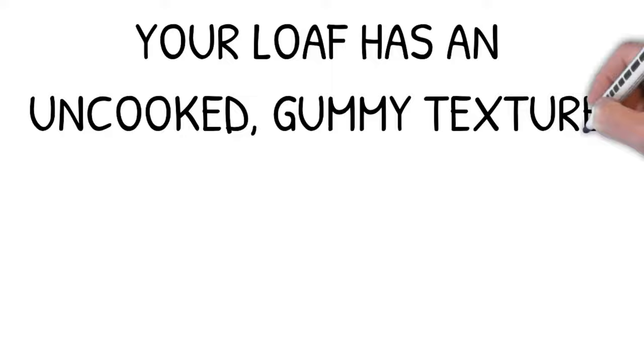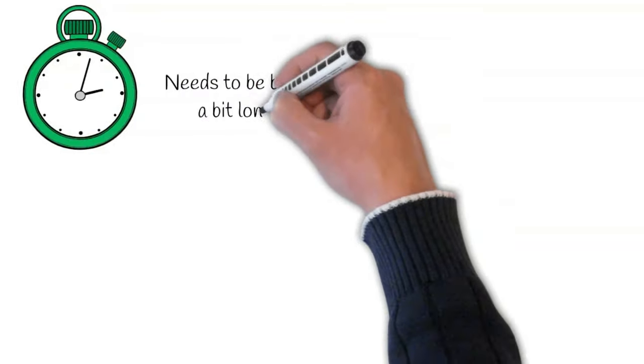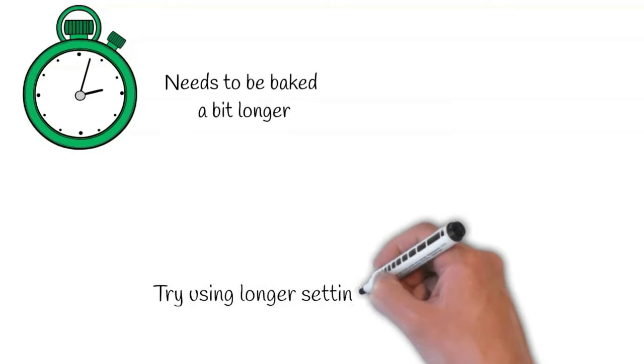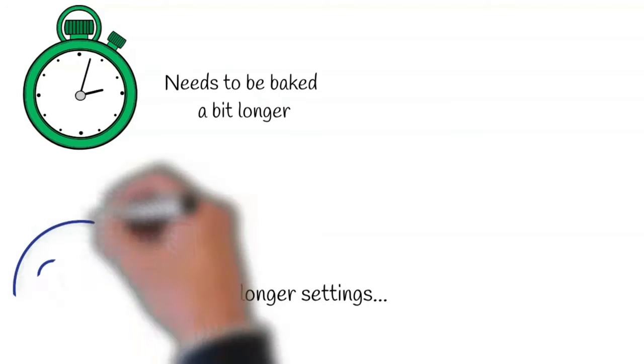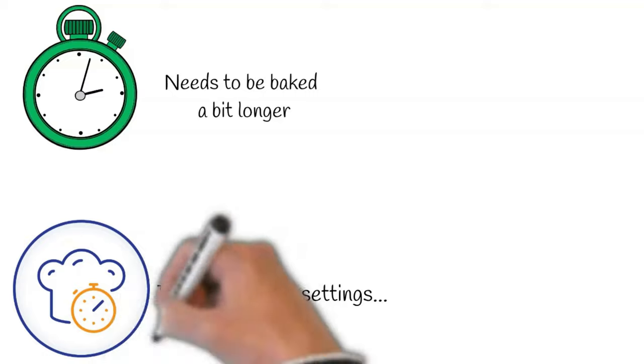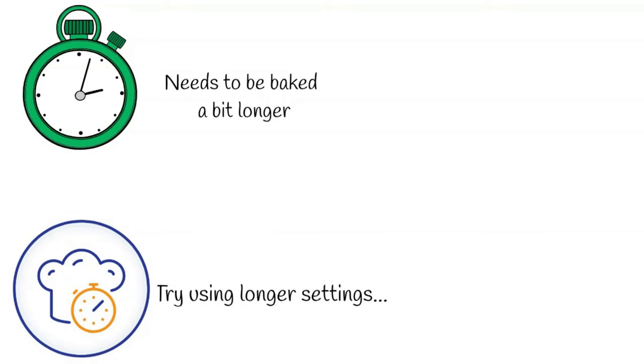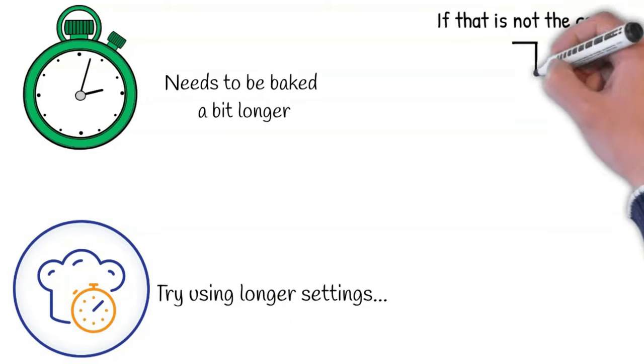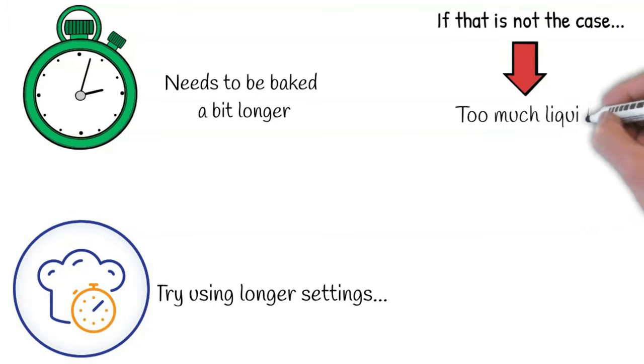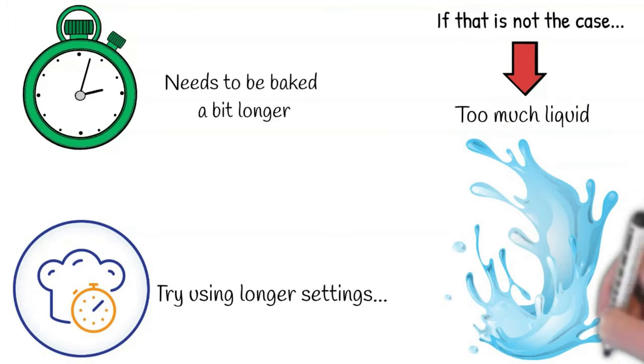Your loaf has an uncooked gummy texture. In this case, your loaf just needs to be baked a bit longer. Try using longer settings, especially if you are trying a recipe that wasn't designed for your bread machine. However, if that is not the case, then the problem is likely to be too much liquid. So check for that during the kneading cycle.